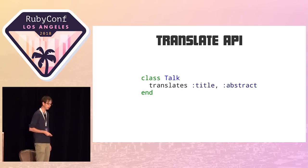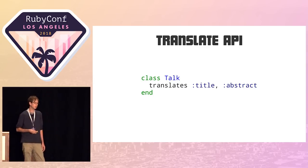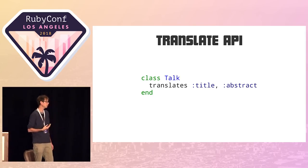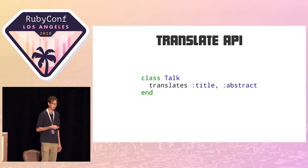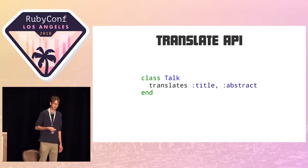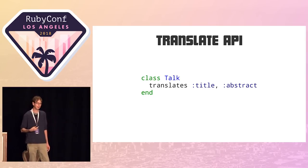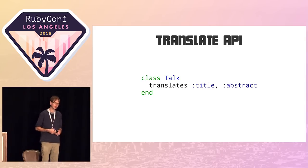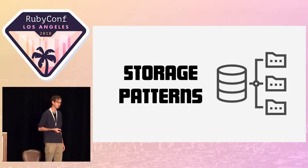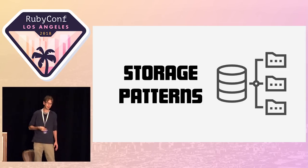How do you define these things? There are actually a number of different gems for this — they all have their own conventions but usually have the same kind of interface. You call some class method, usually called `translates`, pass some attribute names in, and kind of like `attr_accessor`, you get some translated attribute. The challenging part is how you handle the storage of these translated attributes — and this is where we're going to get into the generic idea.